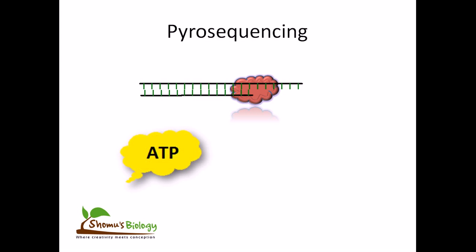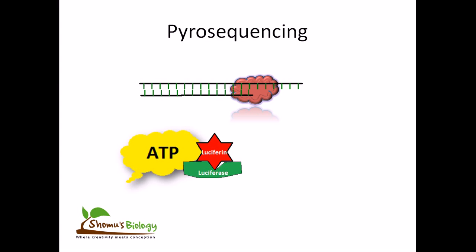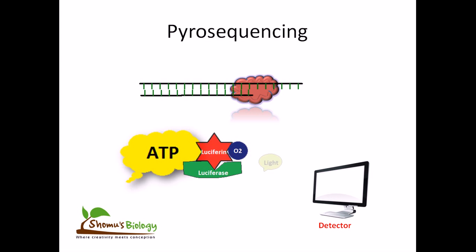The generation of ATP is very important. This ATP will go and attach to luciferin. In the presence of the enzyme luciferase, it will oxidize the luciferin into oxyluciferin. This oxyluciferin can then generate light.